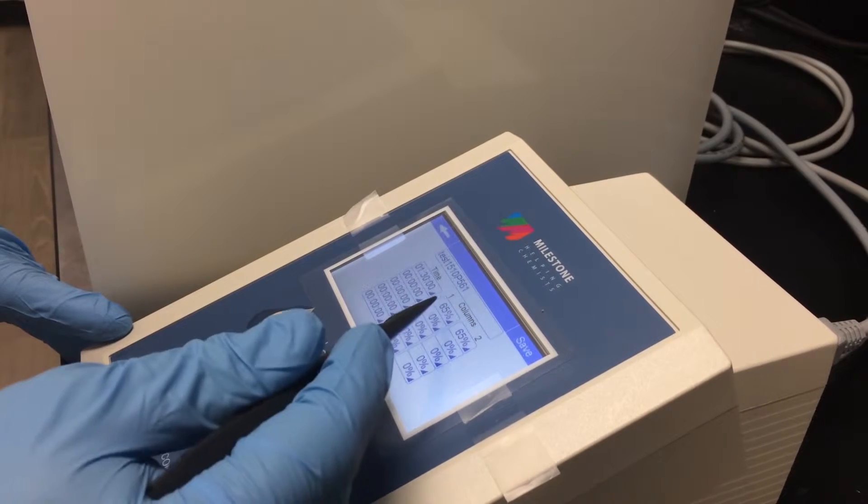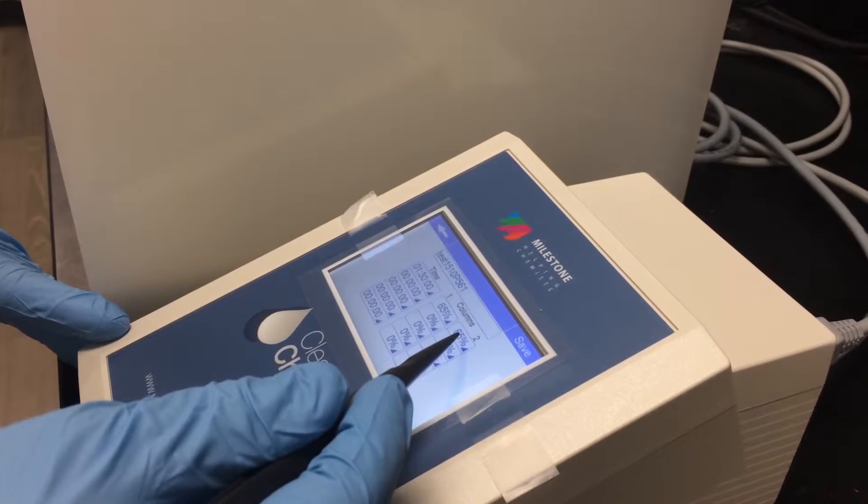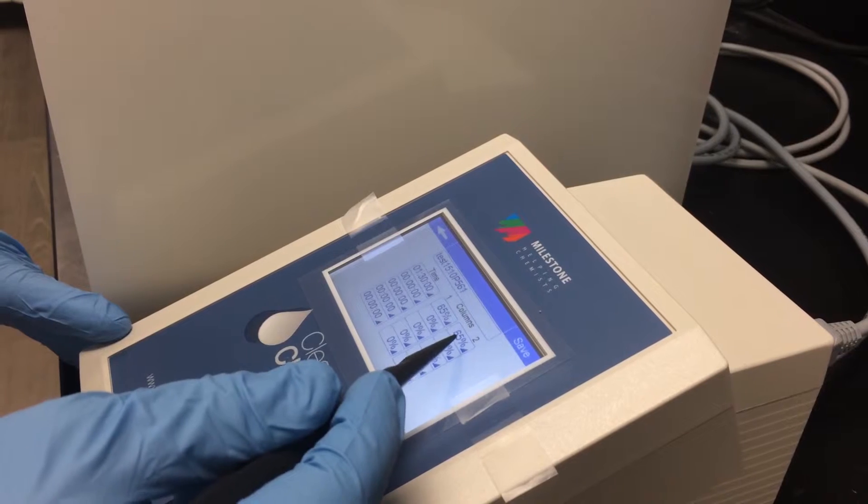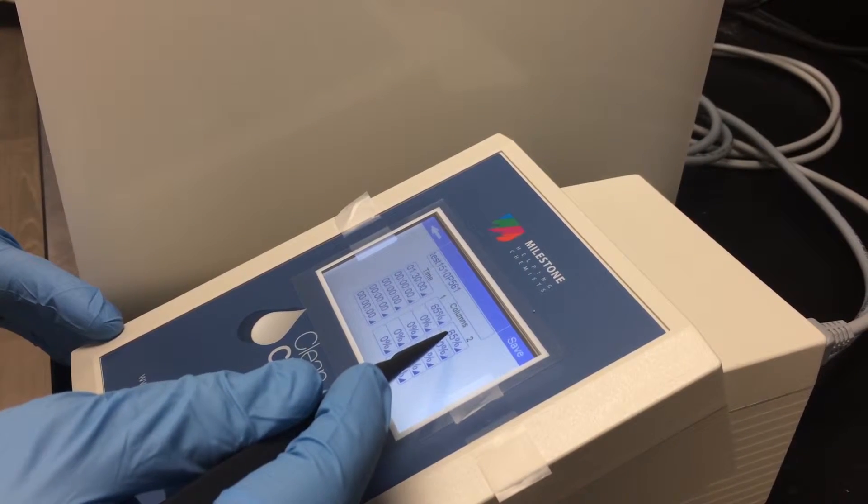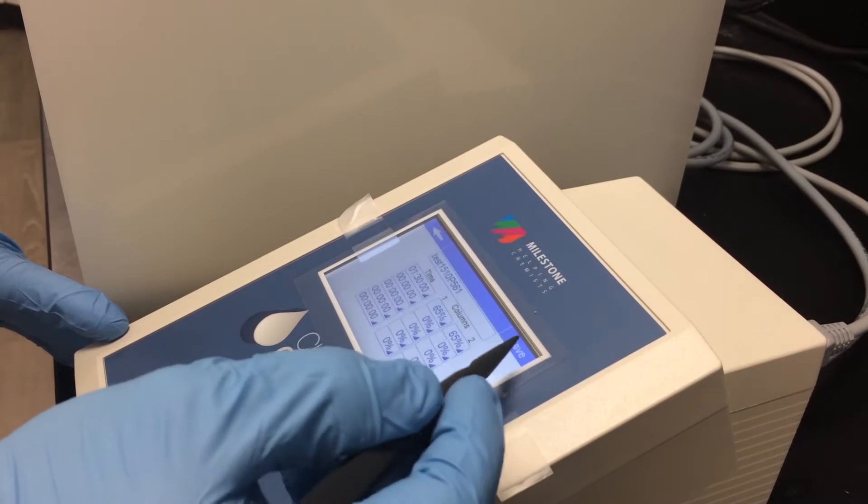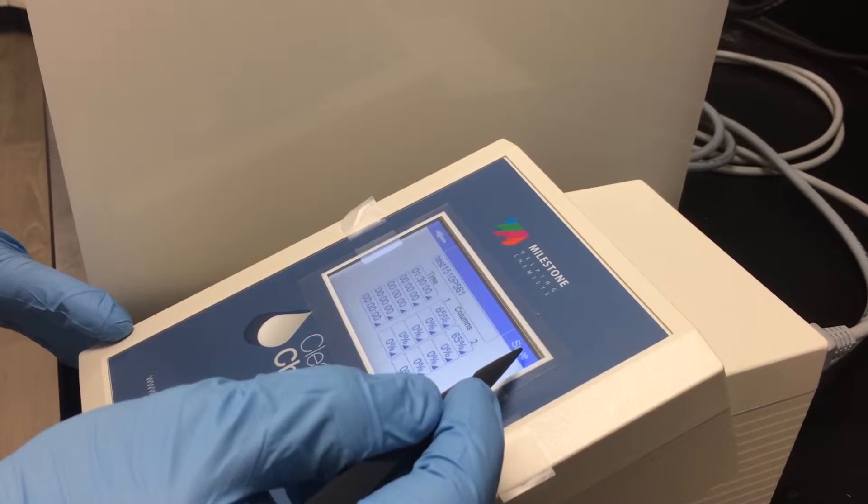If you notice we have the ability to use different power in each of the two distillation chambers allowing you to run two separate types of acid at the same time. When finished we'll click save in the top right hand corner.